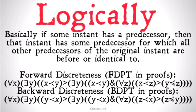Logically, if some instant has a predecessor, then that instant has some predecessor for which all other predecessors of the original instant are before or identical to it. Forward discreteness says: for all x, there exists some y such that x is before y implies there exists some y such that x is before y, and for all z, x being before z implies that y is identical to or before z. And backward discreteness says: for all x, there exists some y such that y is before x implies there exists some y such that y is before x, and for all z, z is before x implies that z is before or the same as y.